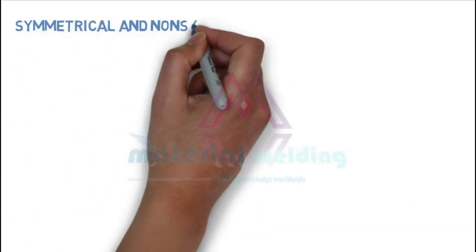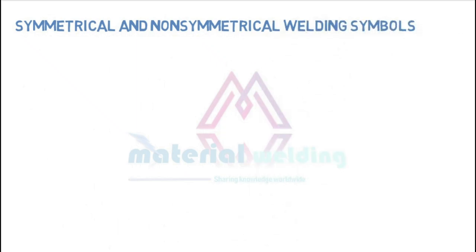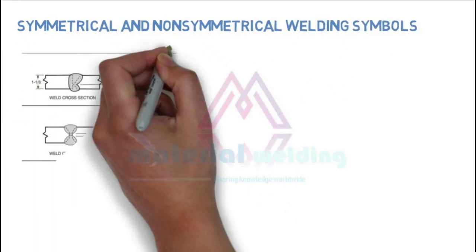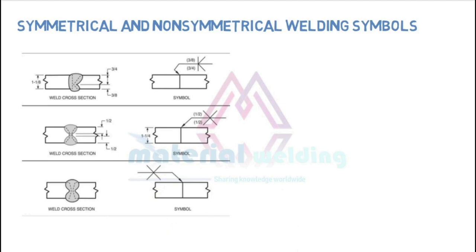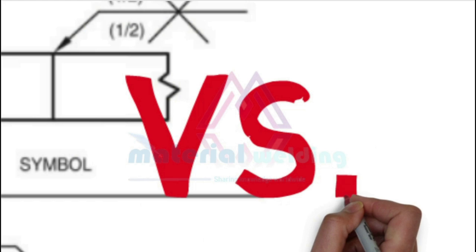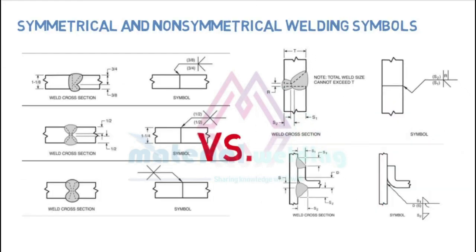Now let's understand the symmetrical and non-symmetrical welding symbol. When the welding joint has the same weld joint preparation on both sides, the symmetrical welding symbol is used — for example, both-side V groove or both-side fillet weld. For welding joints having dissimilar weld joint preparation, non-symmetrical welding symbols are used — for example, one side single bevel and the other side square weld.